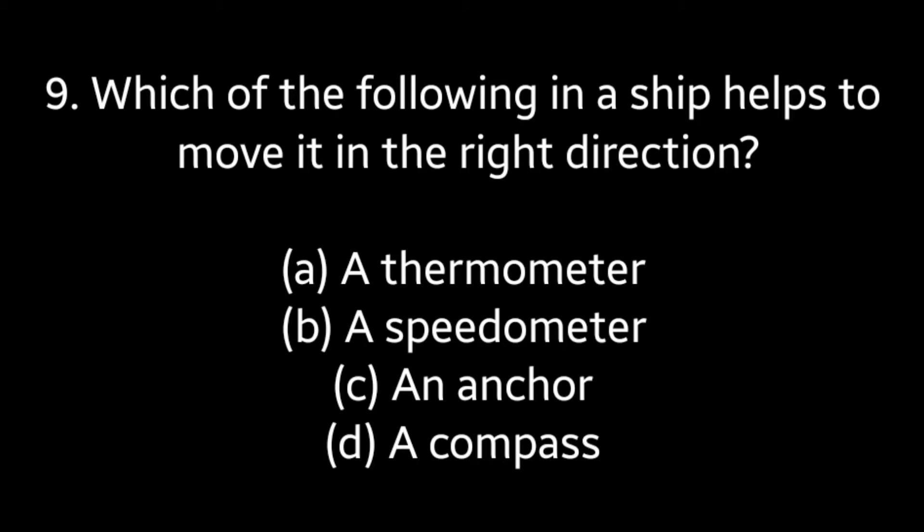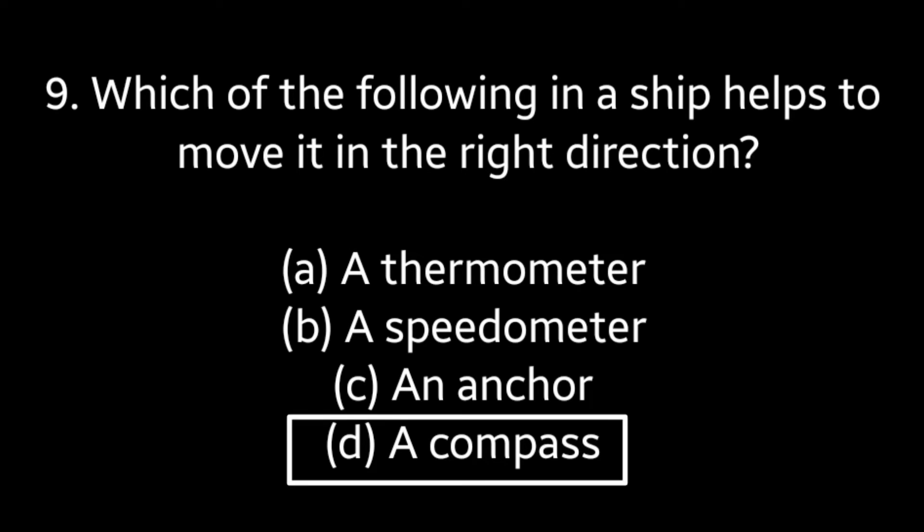Question number nine: which of the following in a ship helps to move it in the right direction — a thermometer, a speedometer, an anchor, or a compass? Answer is option D: a compass.